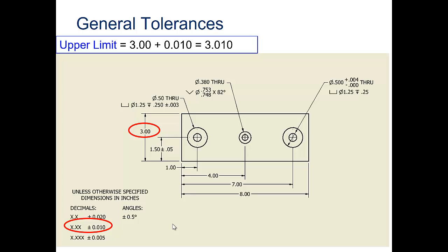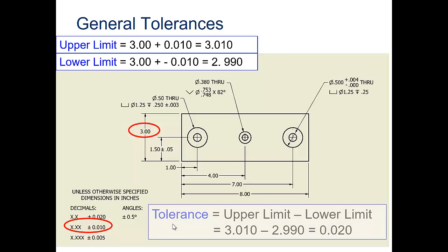If the dimension is 3 with plus or minus .010, the upper limit would be 3.010. The lower limit, if you subtract .010, would be 2.990. The total tolerance would be your upper minus your lower, and that would give you .020 as your tolerance.